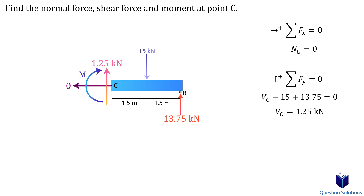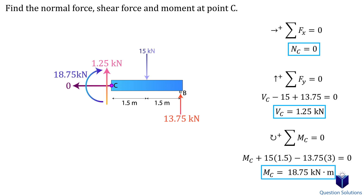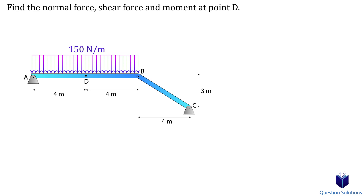To find the moment at C, we write a moment equation about point C. We have the moment at C plus the moment created by the 15 kilonewton force and the moment created by the reaction at B. Solving gives us our answers.